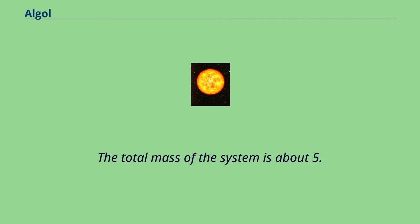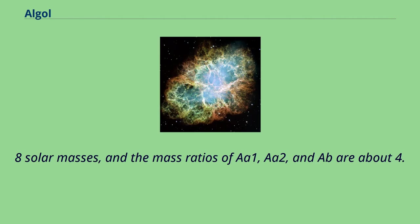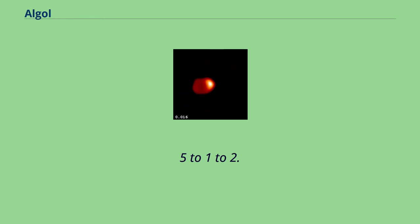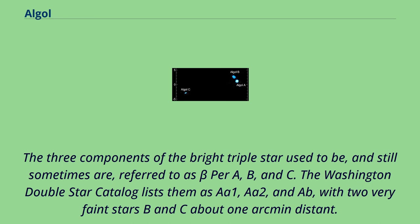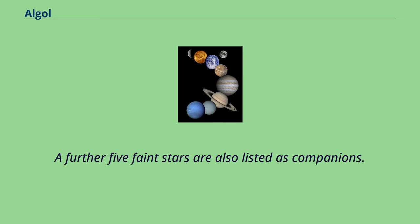The total mass of the system is about 5.8 solar masses, and the mass ratios of A1, A2, and Ab are about 4.5 to 1 to 2. The three components of the bright triple star used to be, and still sometimes are, referred to as Beta Per A, B, and C. The Washington Double Star Catalog lists them as A1, A2, and Ab, with two very faint stars B and C about 1 arcminute distant. A further five faint stars are also listed as companions.